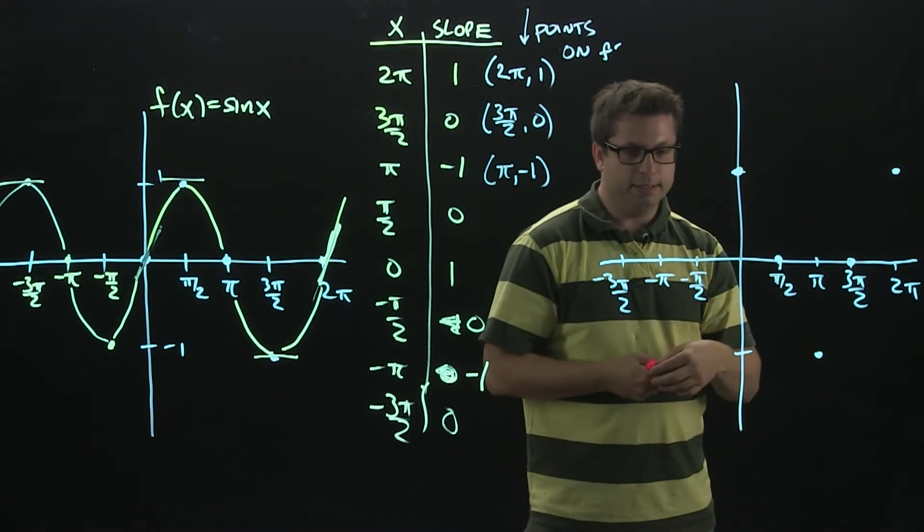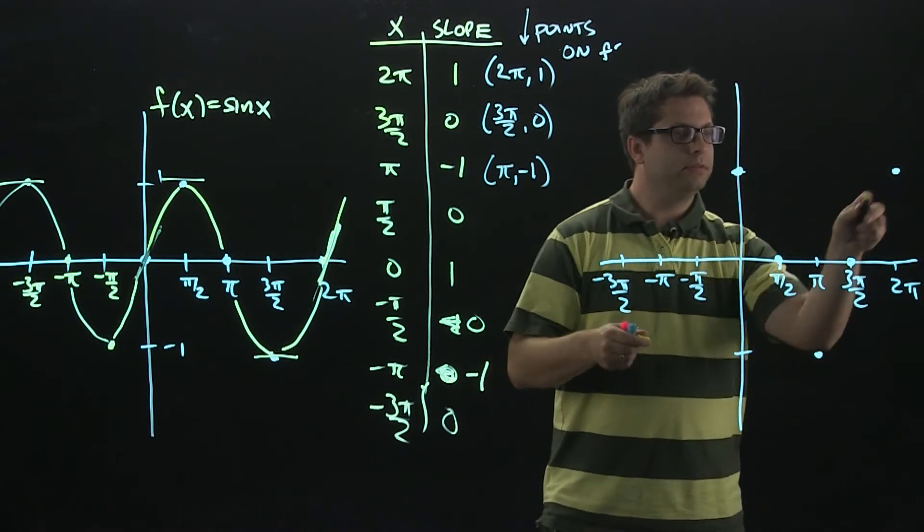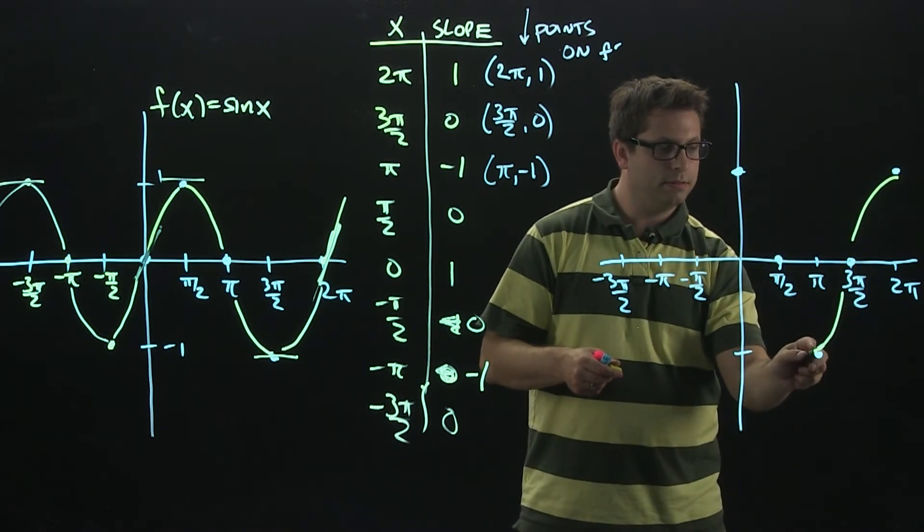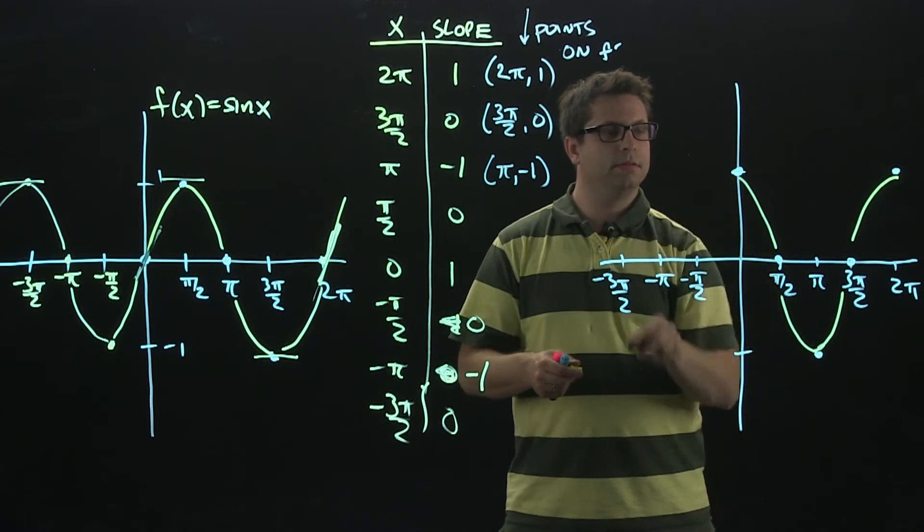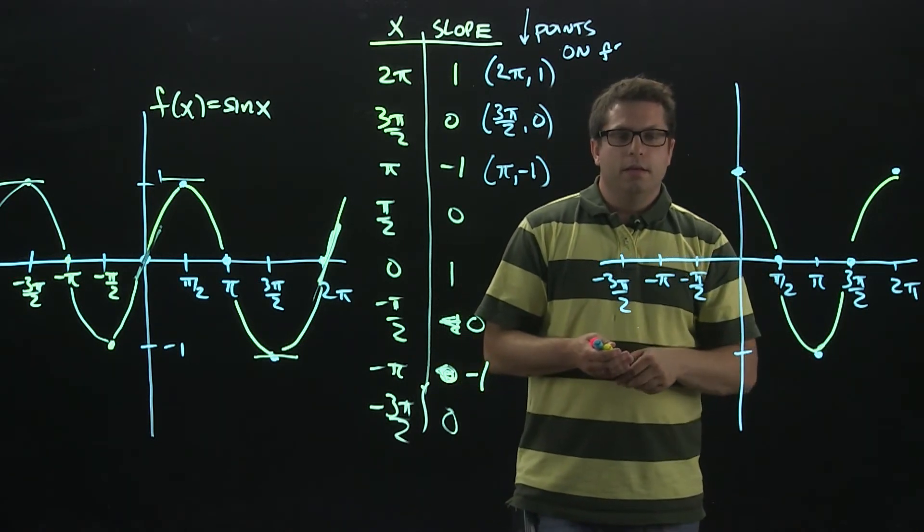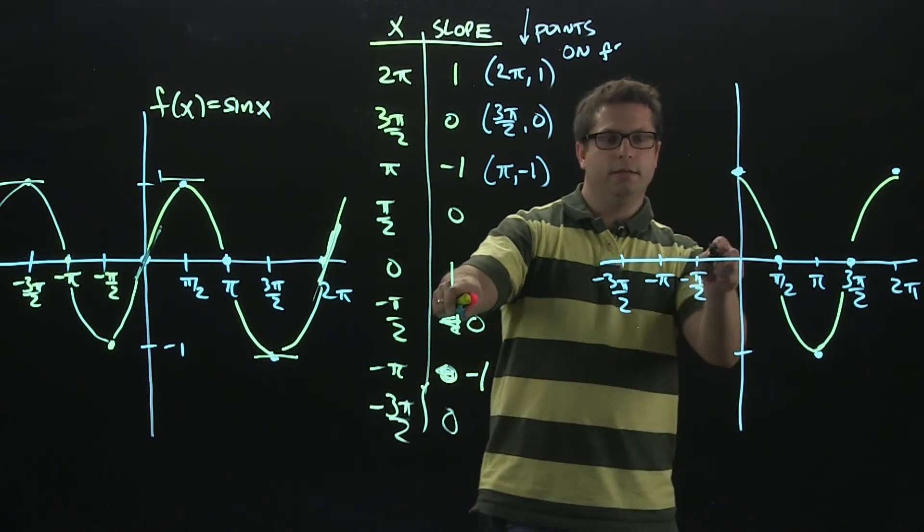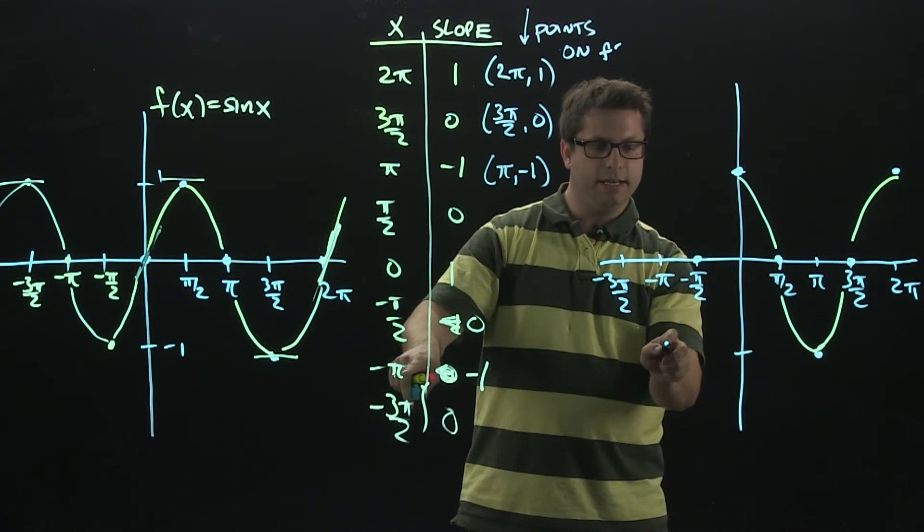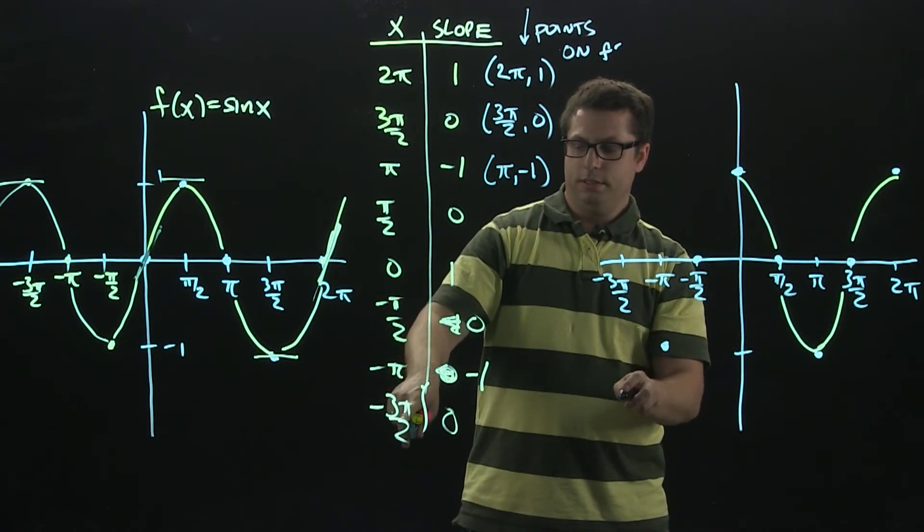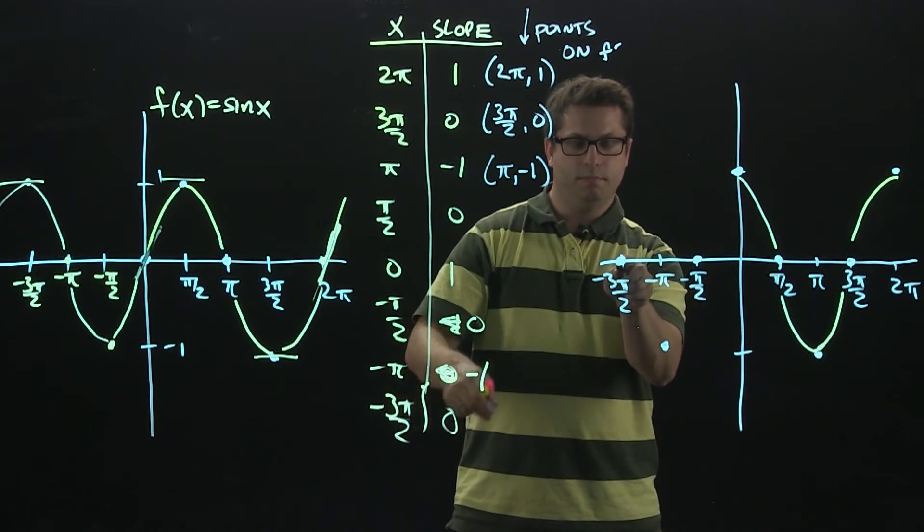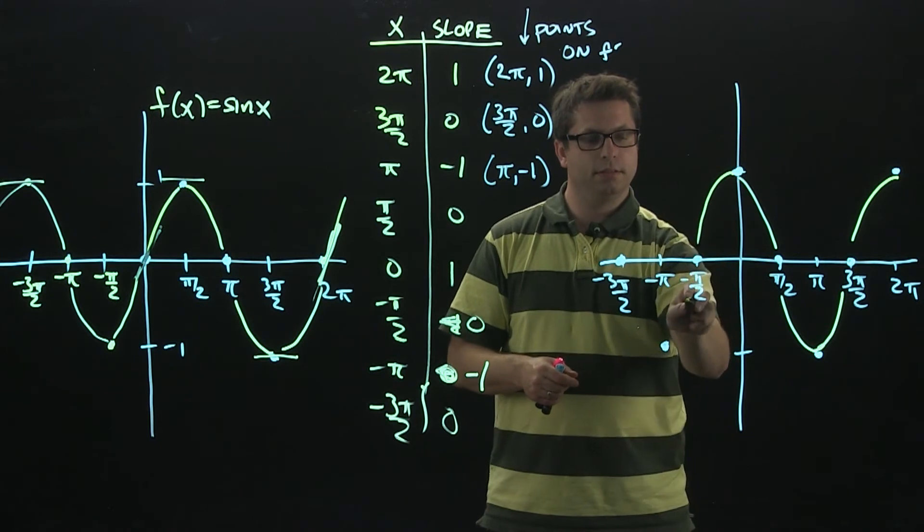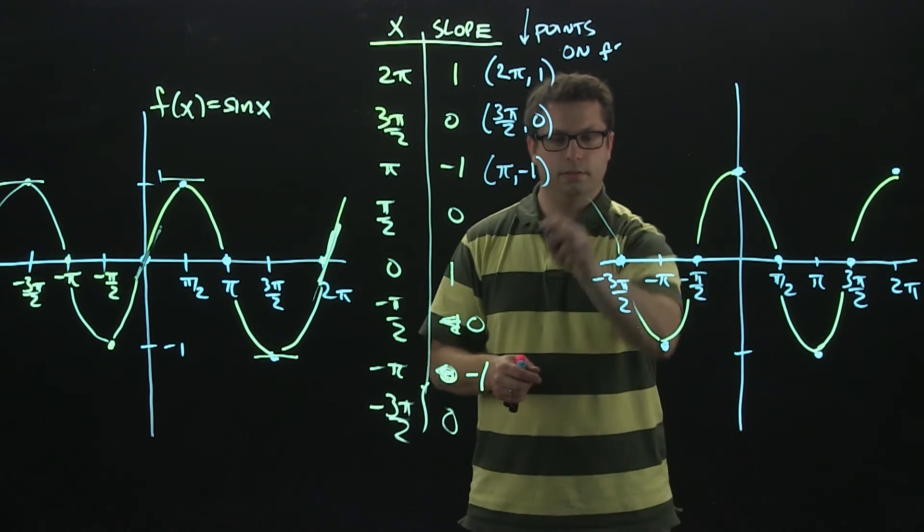So if I connect the dots right now, it'll look like this. Over on this side, at negative pi over 2, we're back at 0. Negative pi is negative 1. Negative 3 pi over 2 is back at 0. Connect these. There you go.